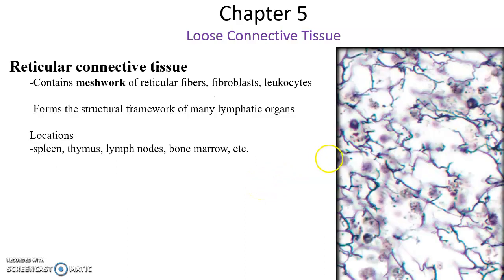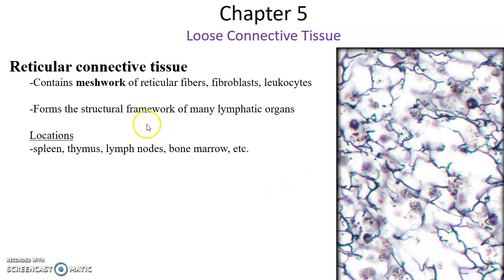Reticular connective tissue has reticular fibers and fibroblasts. They form a mesh — you can see the reticular fibers sort of stretching out, giving a mesh-like structure with spaces to allow things to pass through. They form a structural framework for many lymphatic organs: spleen, thymus, lymph nodes, and bone marrow.